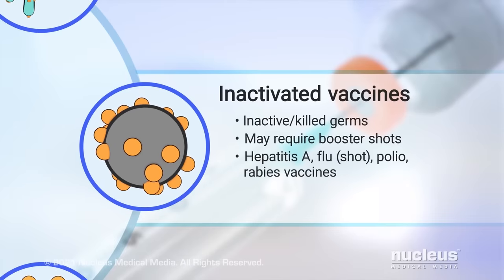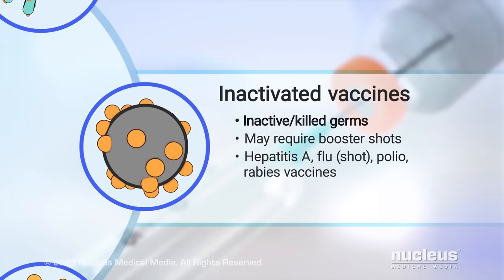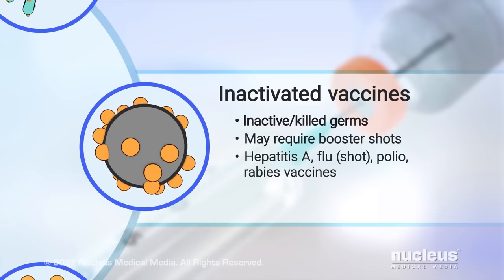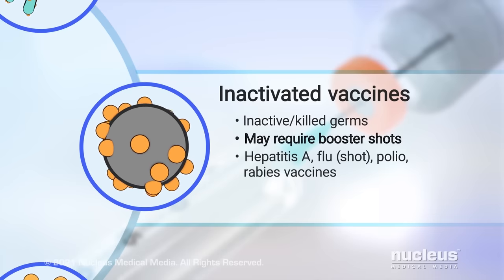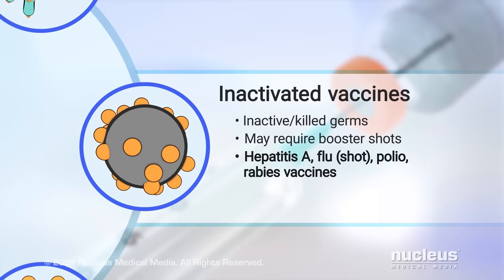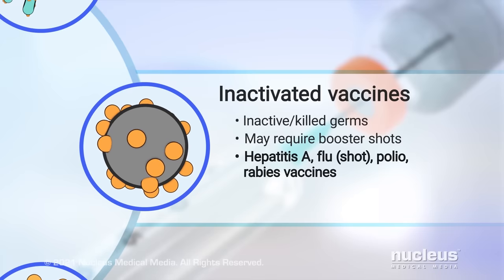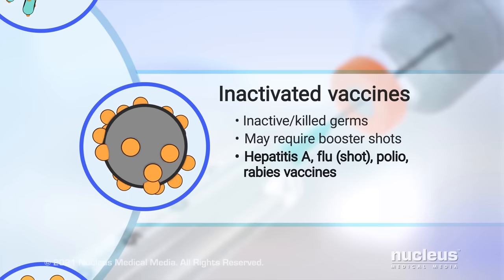Inactivated vaccines use inactive or killed germs. You may need several doses or booster shots over time. Examples are the hepatitis A, flu, polio, and rabies vaccines.